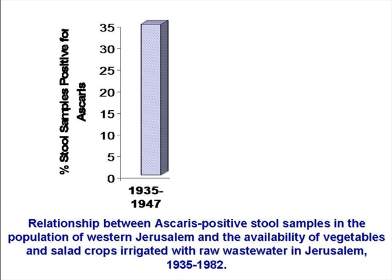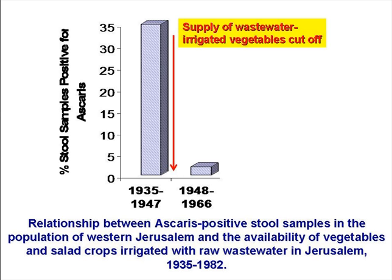Now we're going to examine the situation in Jerusalem over the period from 1935 to 1982 — specifically the prevalence of ascaris infection in the population of western Jerusalem. Up to 1947, these people bought and ate salad crops irrigated with untreated water just outside eastern Jerusalem, and their ascaris prevalence was about 36%. 1948 saw the creation of the State of Israel and the first Arab-Israeli war, one outcome of which was that Jerusalem was partitioned. This meant that the raw wastewater-irrigated salad crops from eastern Jerusalem could not be sold to the residents of western Jerusalem, and their prevalence of ascaris fell to around 2% over the next 18 years.